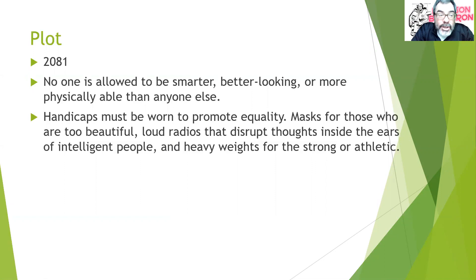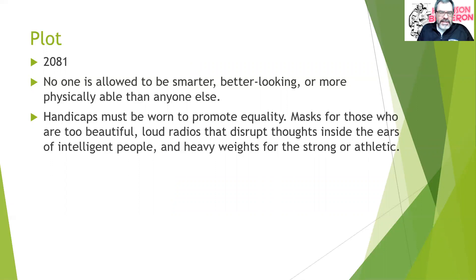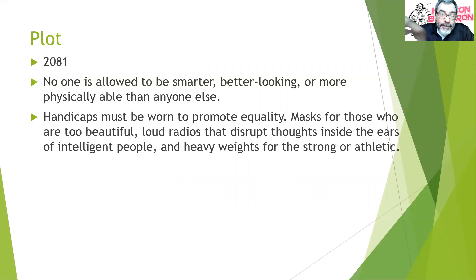The story takes place in 2081 — about 60 years into the future when it was written in the 1960s, so really about 120 years into the future. During this time there are well over a hundred amendments to the Constitution, and a handful of the most important recent amendments basically outlaw any sort of inequality, to the point where no one is allowed to be smarter, better-looking, or more physically able than another person. People who exceed the average — which is set pretty low — have to wear handicaps.